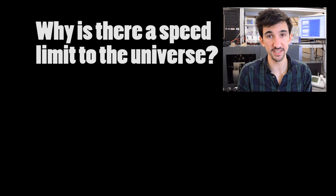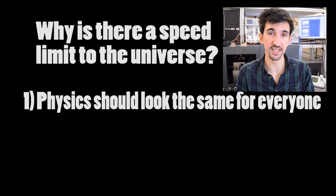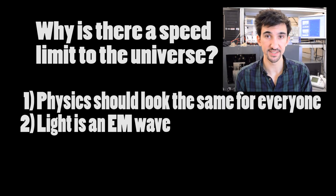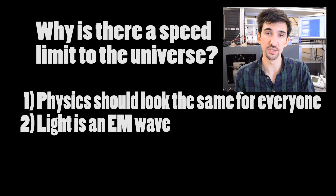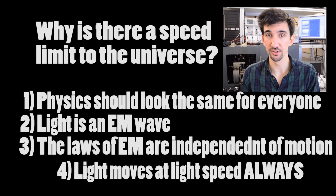Really it's just the speed that any particle without mass travels through space. In an exceptionally quick version, this speed limit exists because Einstein correctly postulated that physics should appear the same for anyone that looks at it, regardless of their relative speed. Now light is an electromagnetic wave described by Maxwell's equations, and Maxwell's equations are also independent of how fast you are moving. So everyone, regardless of how fast they are moving, should measure the speed of light to be the same, meaning you can never hope to catch up to a photon speeding away from you - it will always be going the same speed away from you.